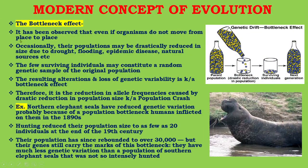The bottleneck effect: it has been observed that even if organisms do not move from place to place, occasionally their populations may be drastically reduced in size due to drought, flooding, epidemic disease, natural disasters, etc. The few surviving individuals may constitute a random genetic sample of the original population. As seen in the diagram, this is a parental population and this is a bottleneck — a drastic reduction in population — after which surviving individuals form new individuals and their numbers will be high in the next generation.